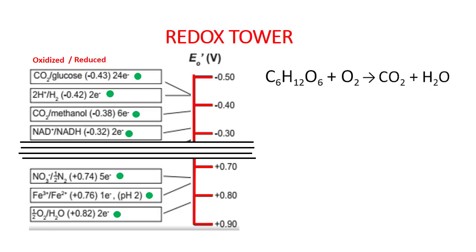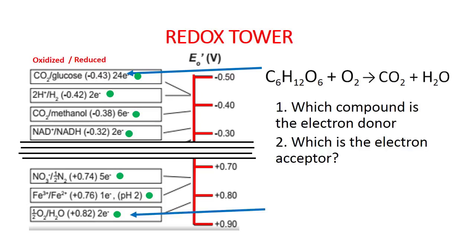Let's look at one more reaction. This is an equation often used to represent the many reactions involved in central metabolism. First, let's find our two half reactions. Glucose is here at the top and oxygen is way down here at the very bottom of this tower. Let's ask our questions again. Which compound is the electron donor and which is the electron acceptor? The glucose half reaction is above the oxygen half reaction.